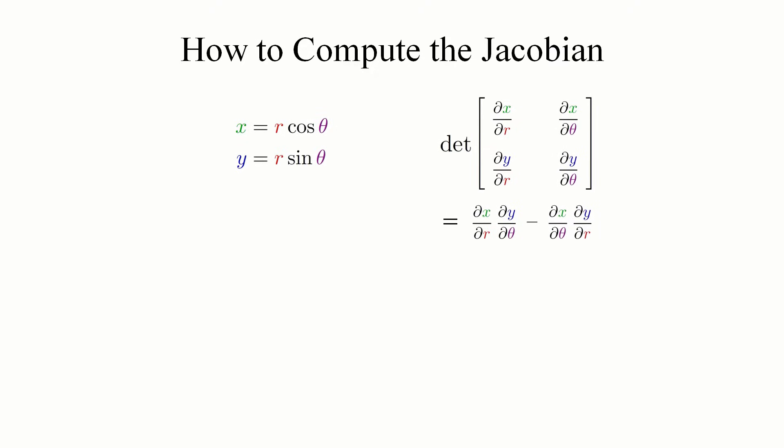Finally, we actually need to take the absolute value of this result. This is because we only care about how the areas of our rectangle scale in magnitude, not whether the rectangles we started with got flipped in the transformation between coordinate systems. Let's apply this formula to our polar coordinate transformation and see what the Jacobian factor is.